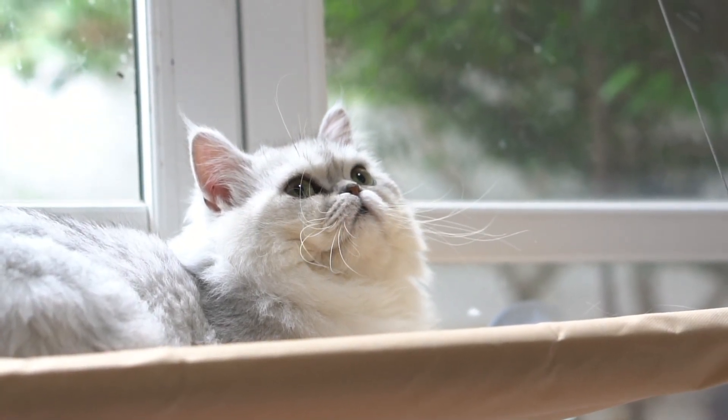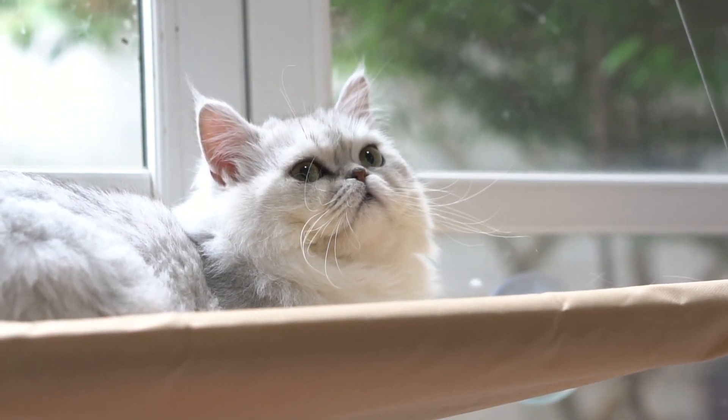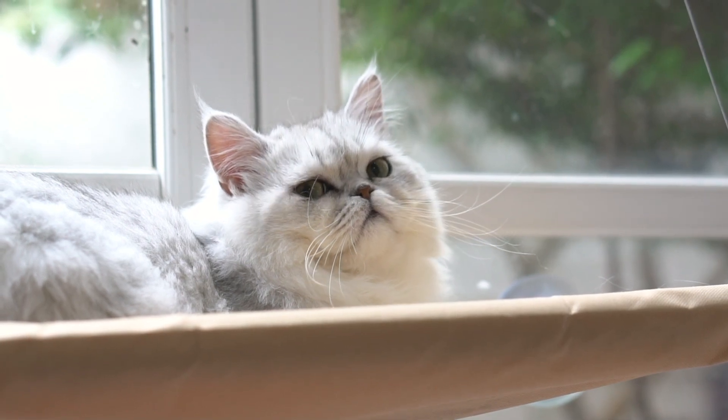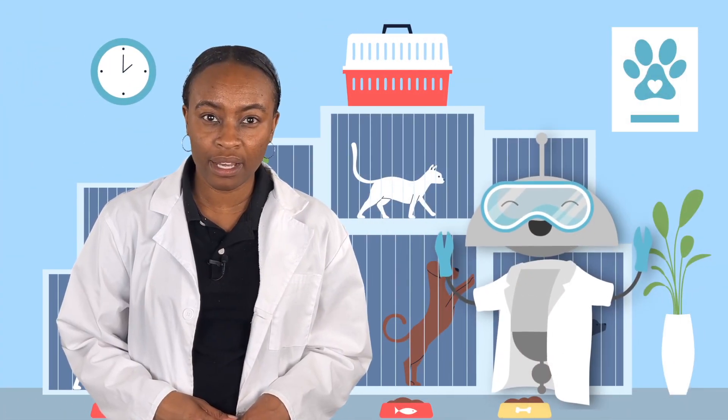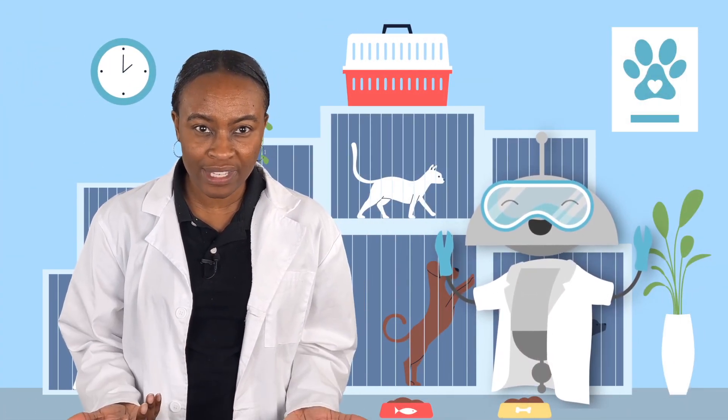We decided to visit the animal shelter to look at some of the cats that are up for adoption here. They're so cute. And now that I'm observing them, I'm noticing things I've never seen before. Like here, on this cat's face. Do you see those long hairs? What are those? Mia, what can I do to figure this out?